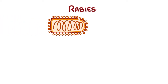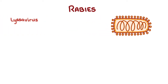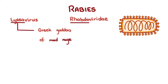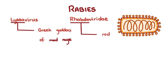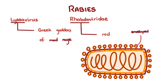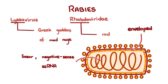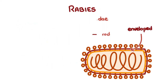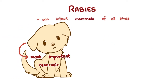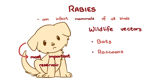The rabies virus is a member of the genus Lyssavirus of the family Rhabdoviridae. Lyssa comes from the Greek goddess of mad rage, and rhabdo meaning rod, referring to its cylindrical nucleocapsid that looks somewhat like a rod but is really more of a bullet. It's an enveloped virus with linear negative-sense single-stranded RNA. It can infect mammals of all kinds, but the most important reservoir is the domestic dog. Wildlife can also be vectors, including bats, raccoons, skunks, and foxes.